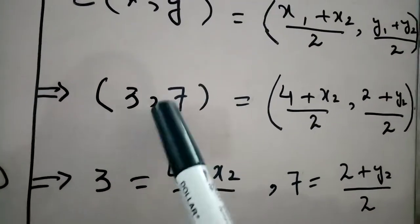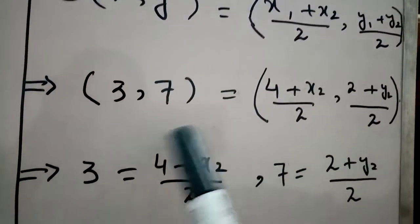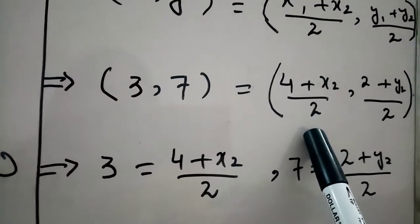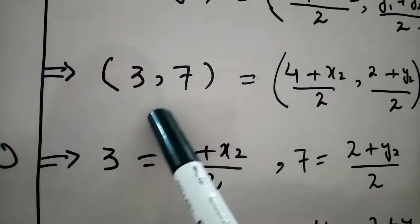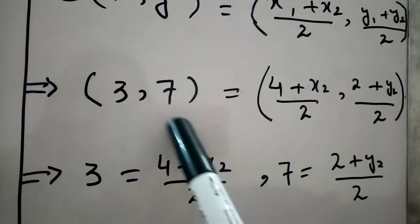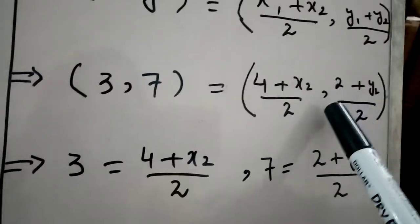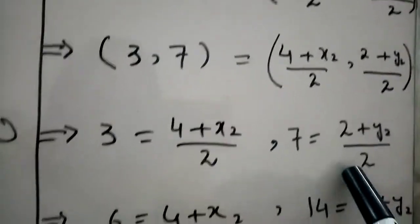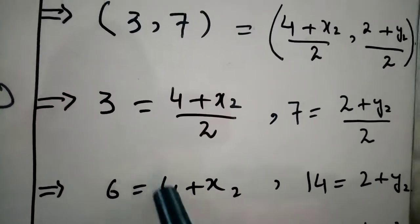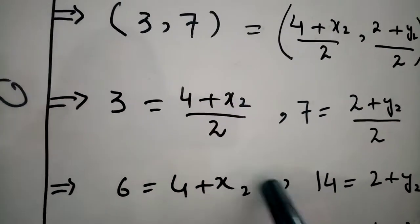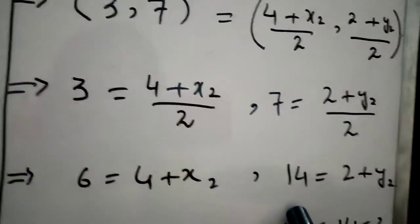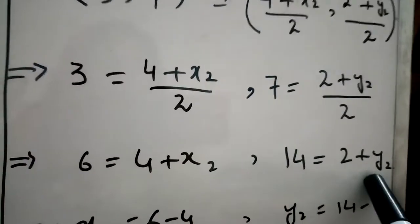By comparing first value with first, we have 3 equals (4+x₂)/2. Comparing second value, 7 equals (2+y₂)/2. By cross multiplication, 3 times 2 gives 6 equals 4+x₂. By cross multiplication, 7 times 2 gives 14 equals 2+y₂.